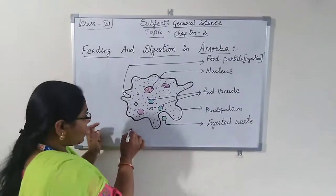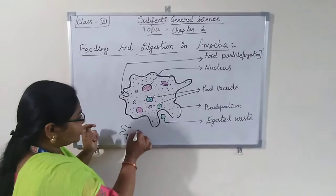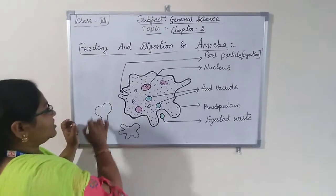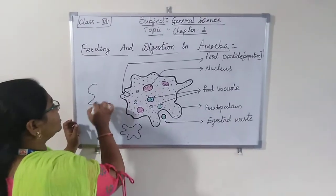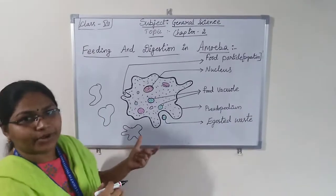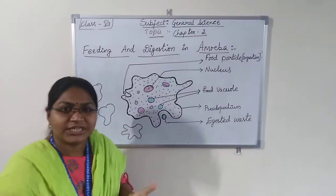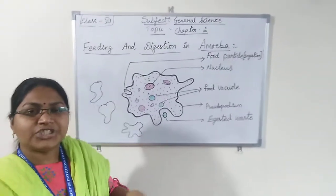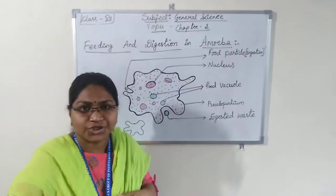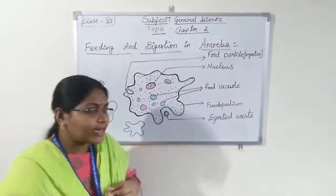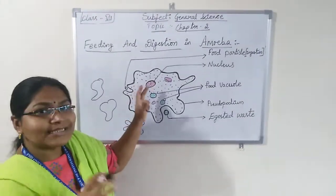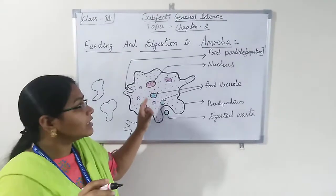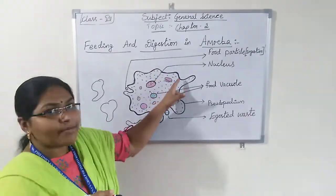Amoeba constantly changes its shape and position. Suppose you see it like this — the next minute it changes to this structure, and afterwards it changes again. That is why amoeba has no constant shape, because it is constantly changing its shape and position.